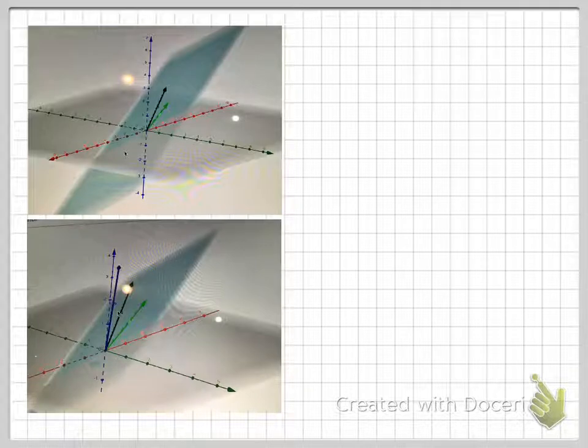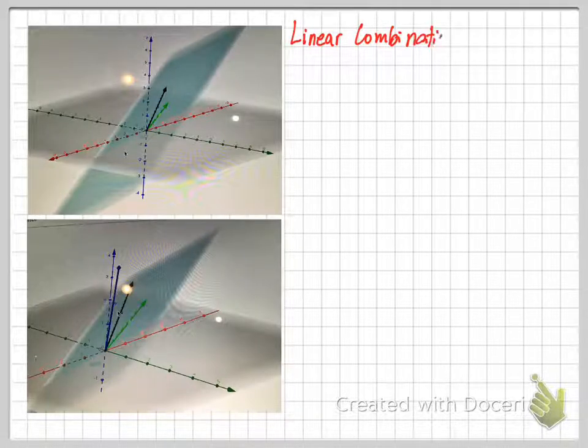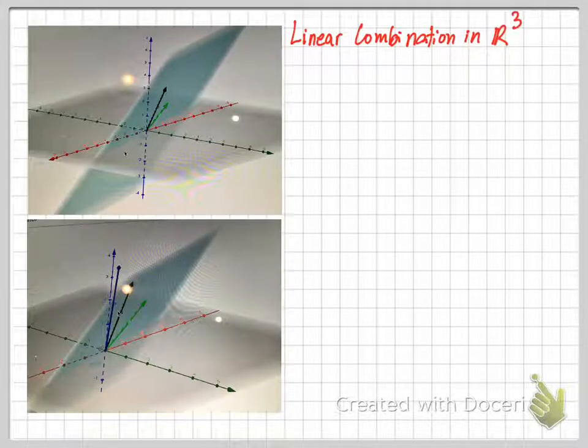Now we move to space R³, a three-dimensional space. You can consider this space as an x, y, z coordinate system.